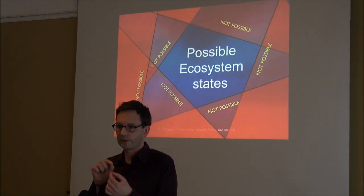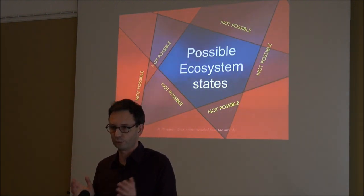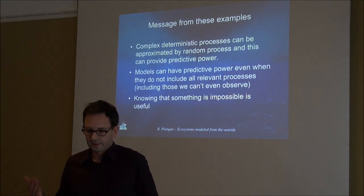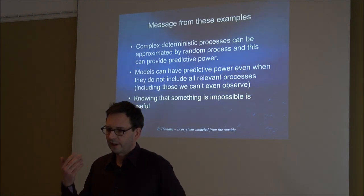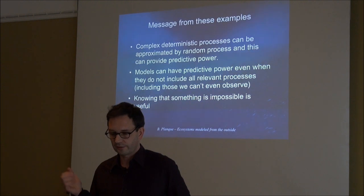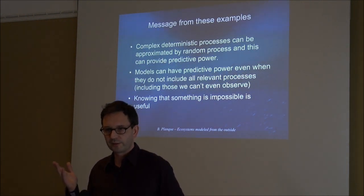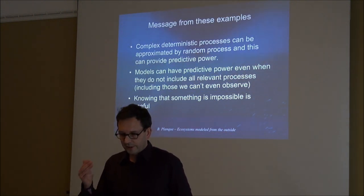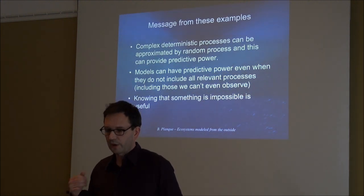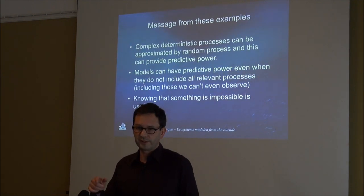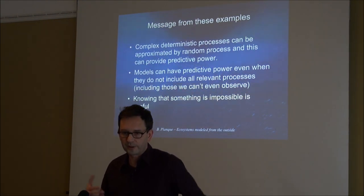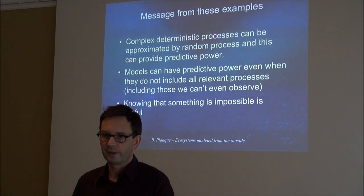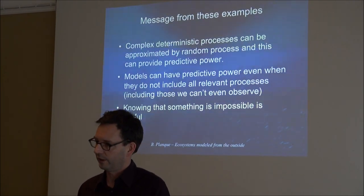The key messages from these examples: complex deterministic processes can be approximated by random processes — as with the dice — and this still provides predictive power. Models can have predictive power even when they don't include all relevant processes, including processes we cannot observe. For an ecosystem, there is no hope of observing everything. And knowing that something is impossible is useful — you can use it as the building brick of your model.